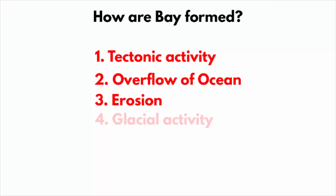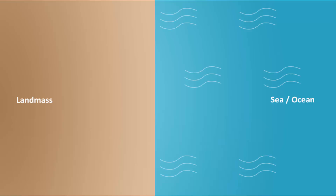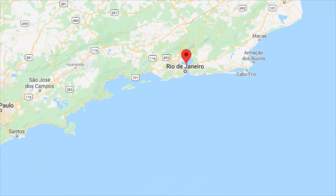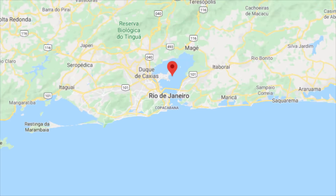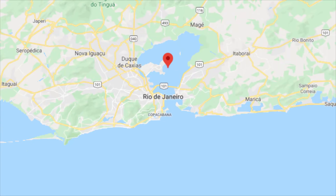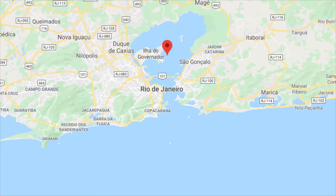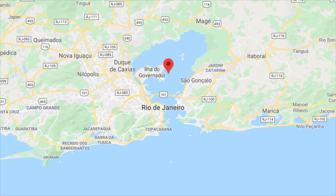Bays are also formed due to erosion. Many times the ocean erodes the soft rock and sand that forms an entire coastline, which eventually curves the coastline inward, forming a bay. Guanabara Bay, for example, was formed as the Atlantic Ocean eroded an inlet in South America.